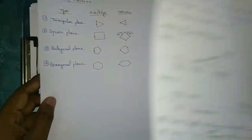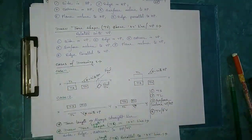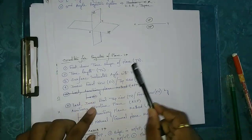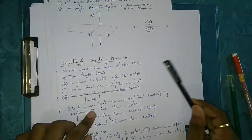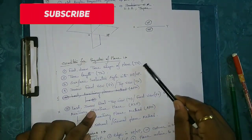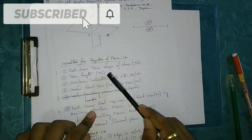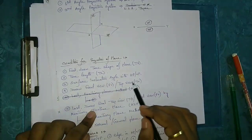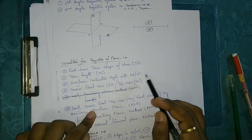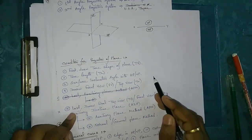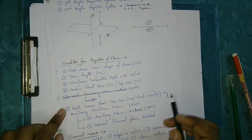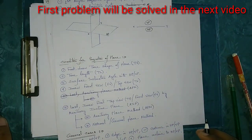So the conditions are now clear. The steps are: first, draw the true shape in VP or HP. Then the true shape step; next the XY line step; then the inclination angle step; then the front view step; and finally, use the auxiliary perimeter for the top view. Next step, the problem is solved and the process is complete.